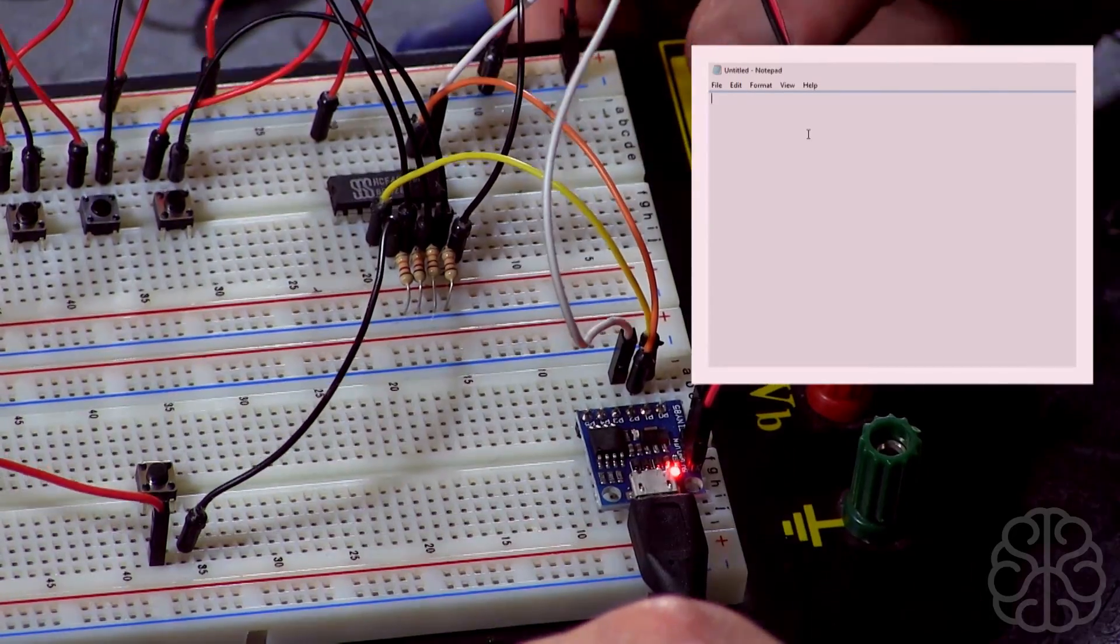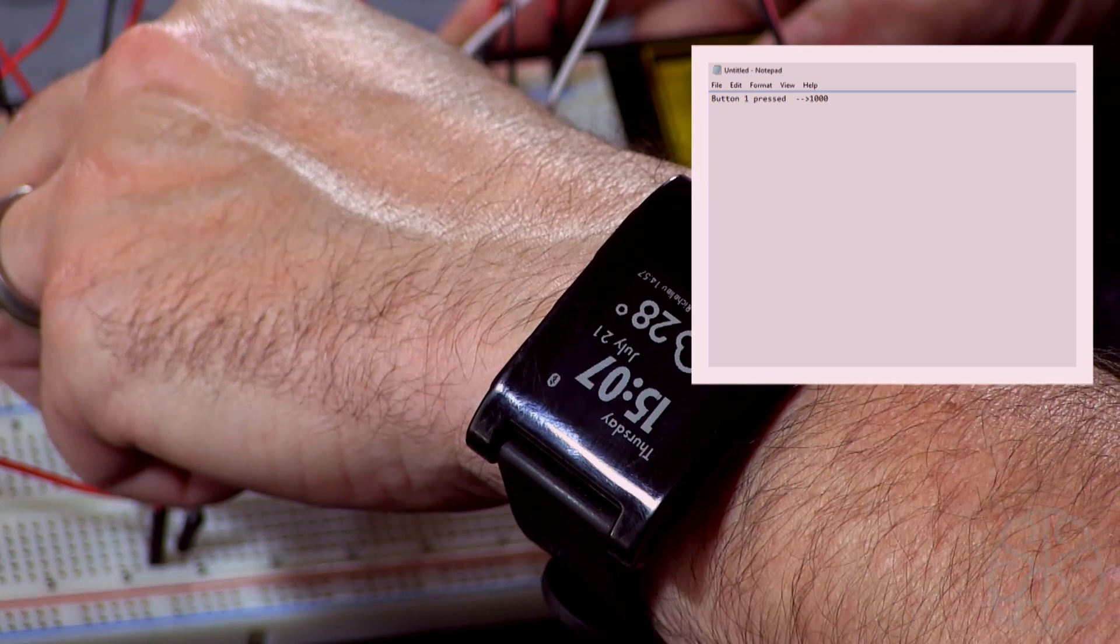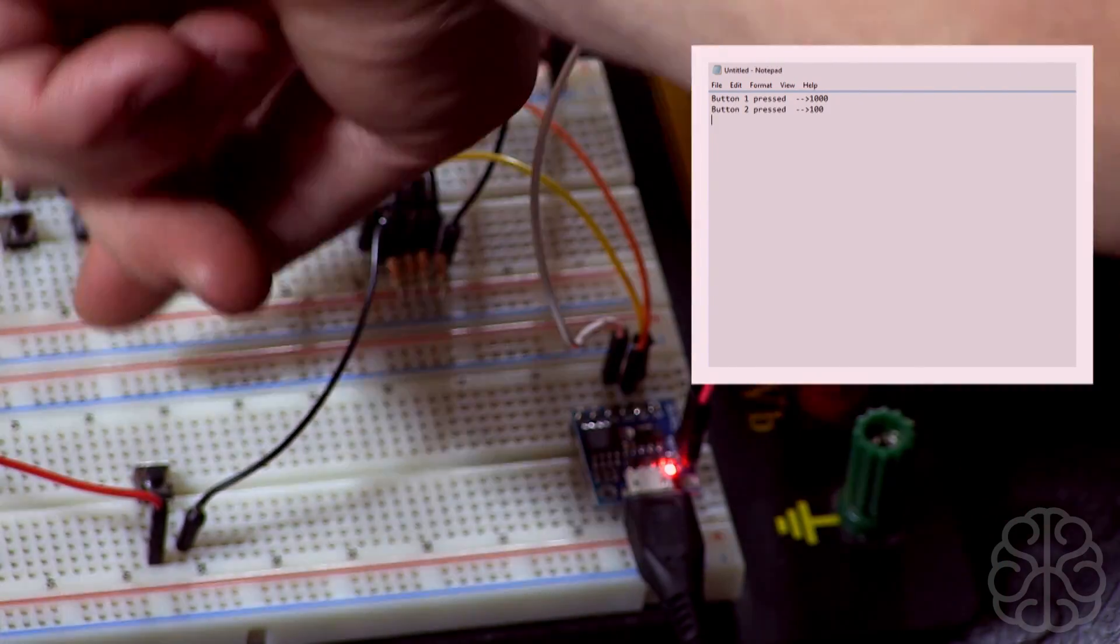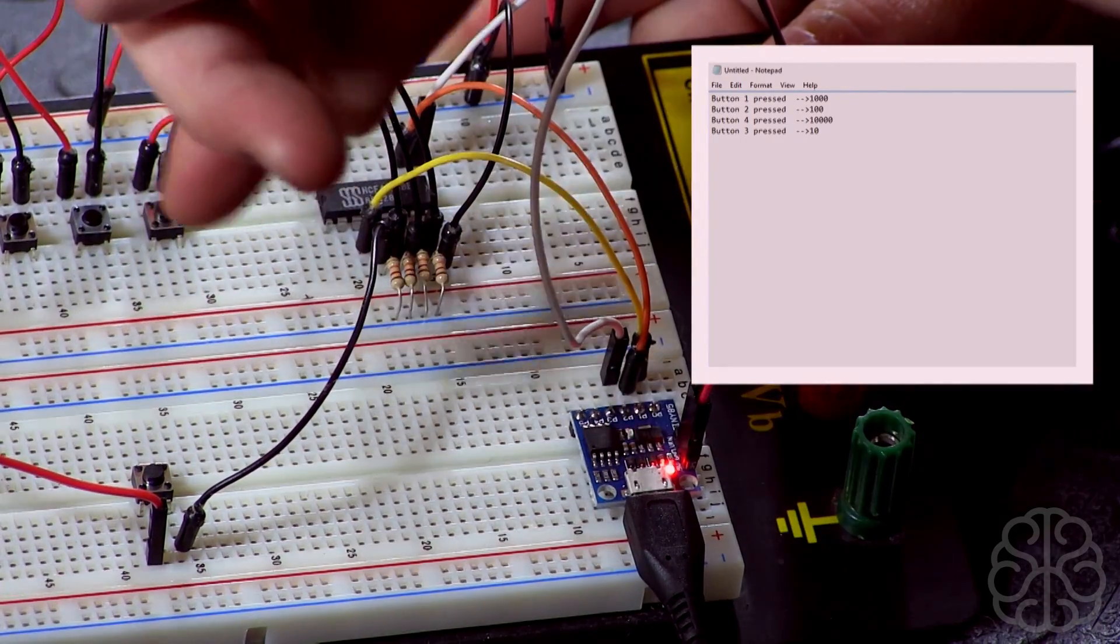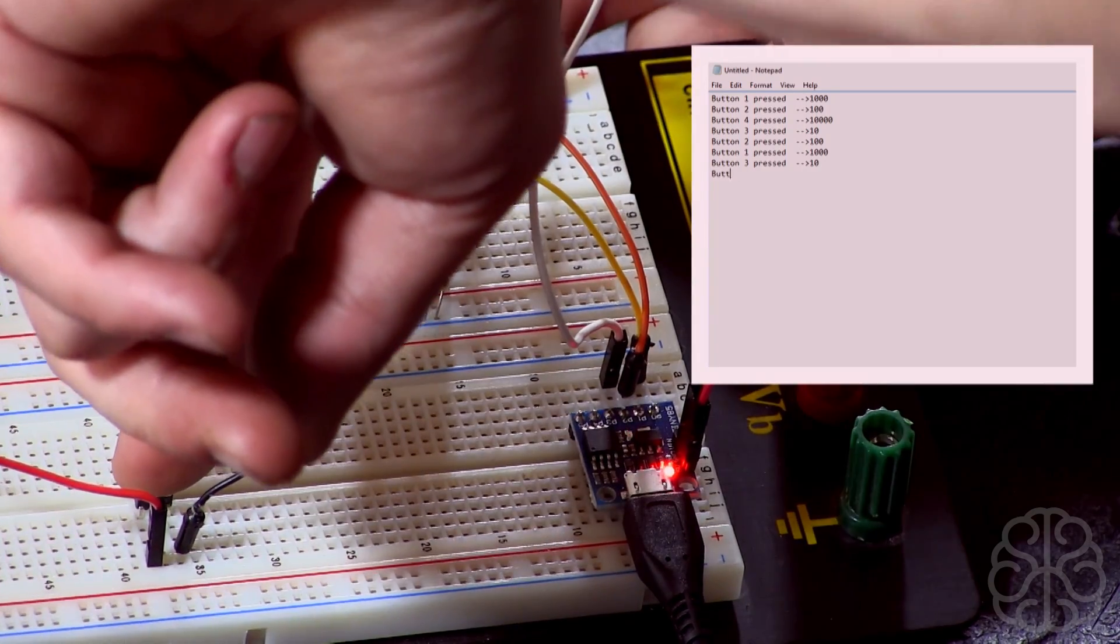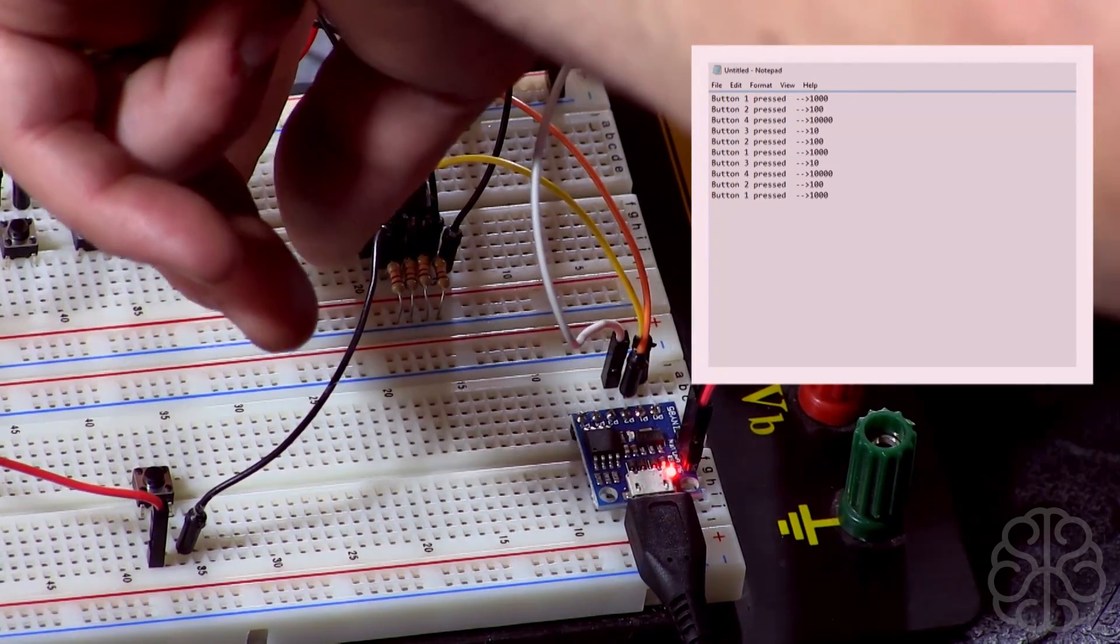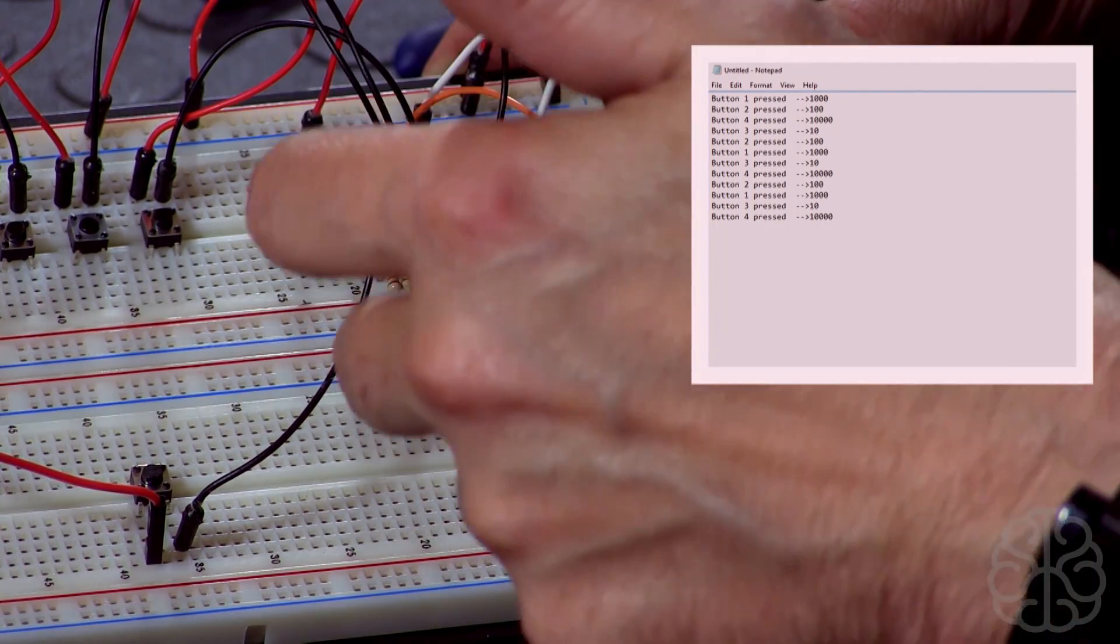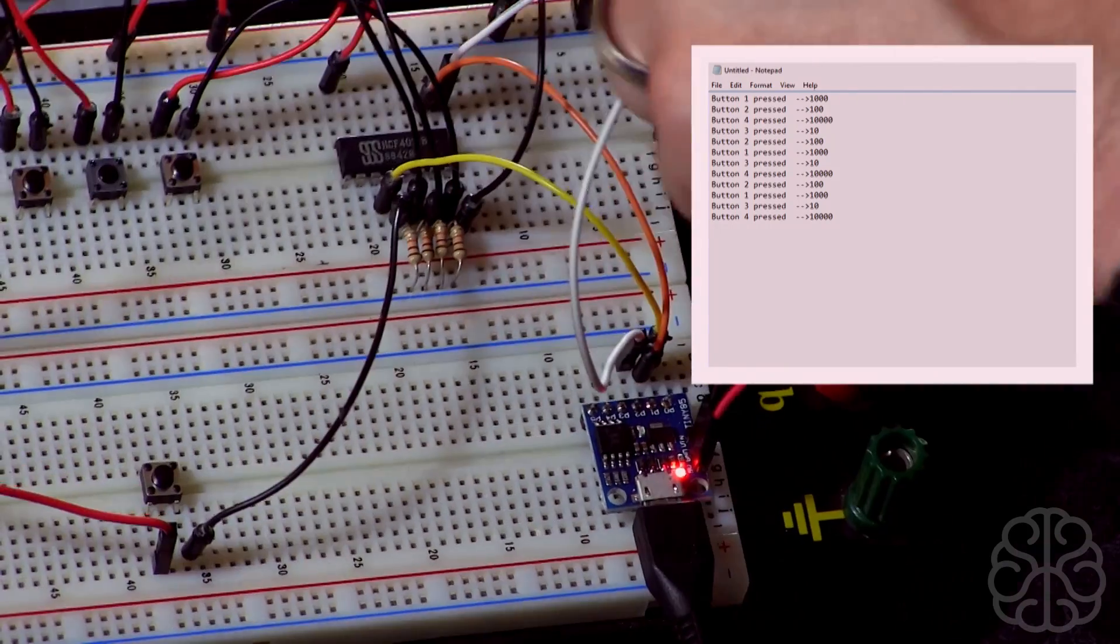Let's go ahead. Button one is pressed. Button two. Button three. Button four. Button three. Button two. Button one. As you can see it responds very fast every time I press a button and it reads the information.